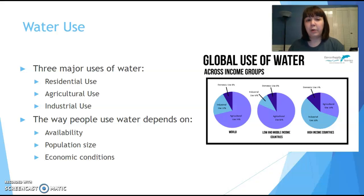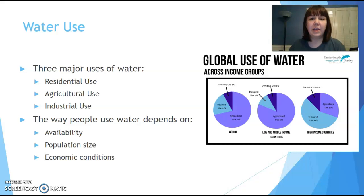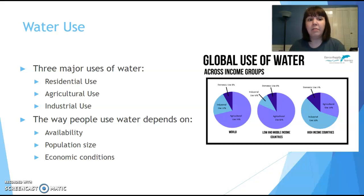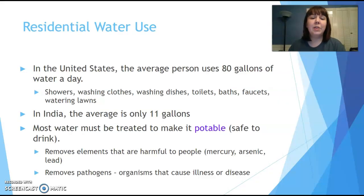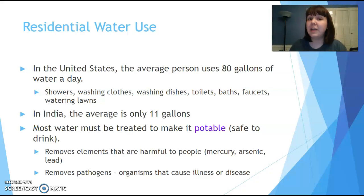How we use water varies by location. We can break it down into three main uses: residential — what people use day to day; agricultural — growing crops and raising animals; and industrial — manufacturing and generating electricity. The way we use water depends on how much we have, how large the population is, and economic conditions. In the United States, the average person uses 80 gallons of water a day — distributed among all uses including electricity generation and industrial processes, not just what comes out of your tap.